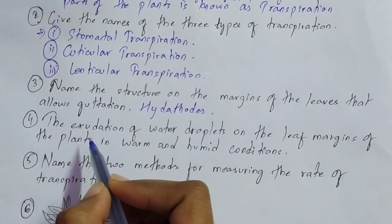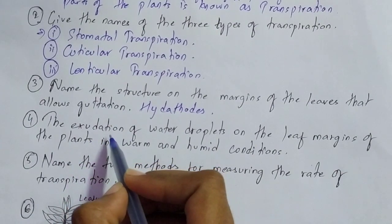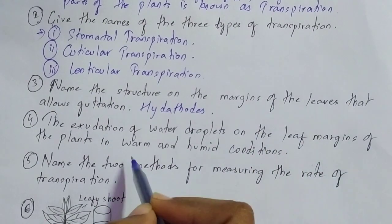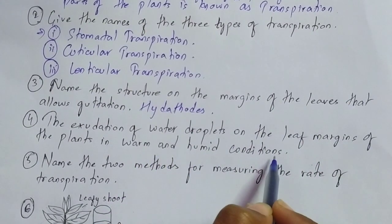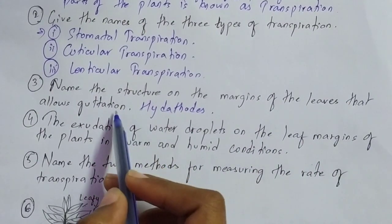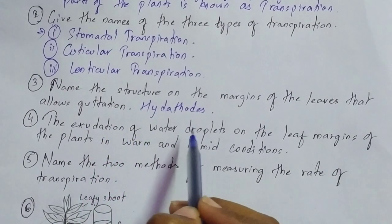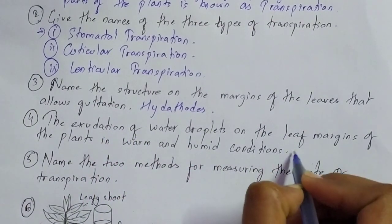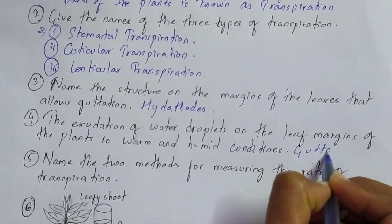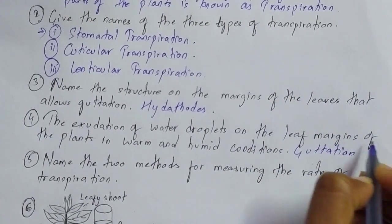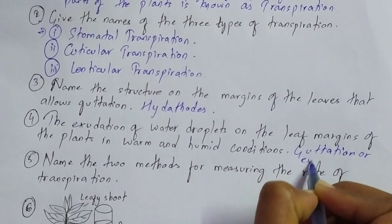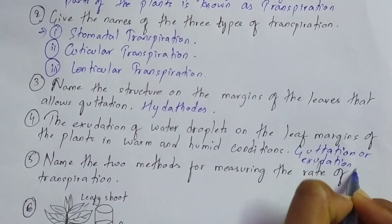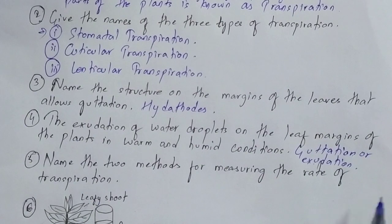Question number four is again a name-the-following type question. The exudation of water droplets on the leaf margins of the plants in warm and humid conditions — this process is called guttation. Guttation is the exudation of water droplets on the leaf margins of the plants in warm and humid conditions. As already mentioned, it is also called exudation, so you can write either guttation or exudation.